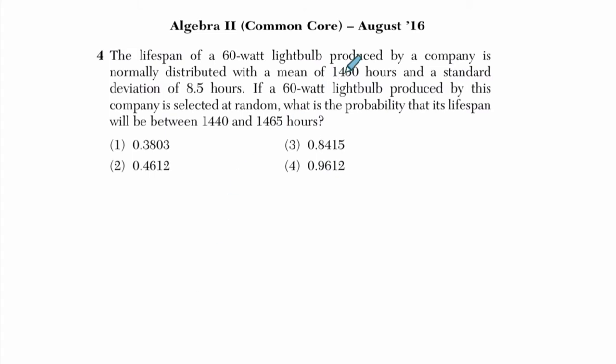Okay, so we've got a light bulb with a normal distribution with a mean of 1,450 hours and a standard deviation of 8.5 hours. They want to know what is the probability that its lifespan is between 1,440 and 1,465 hours.